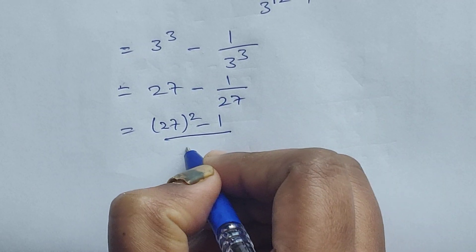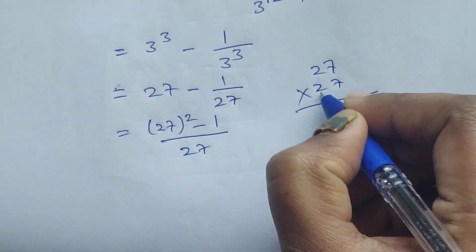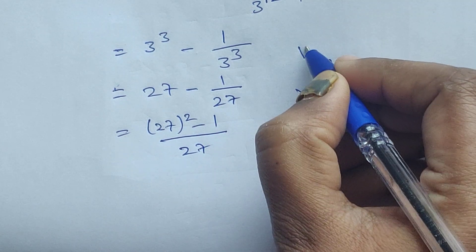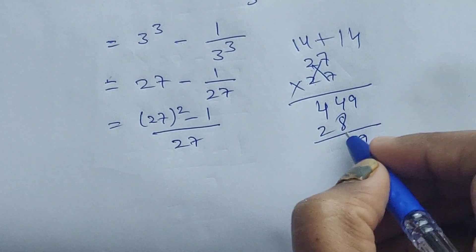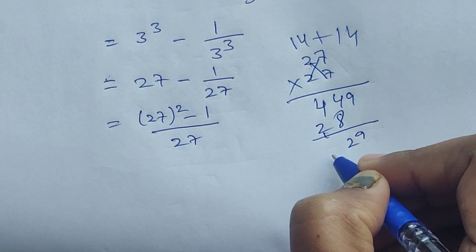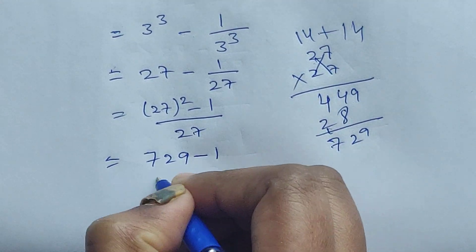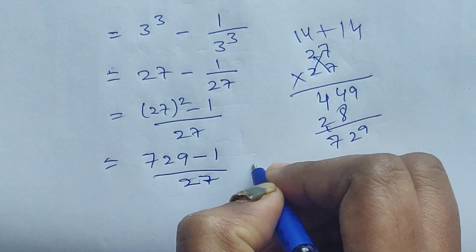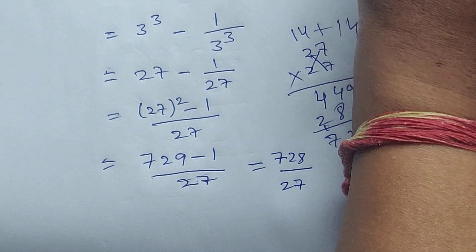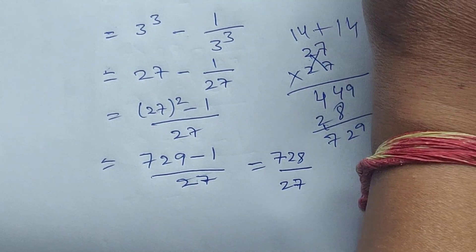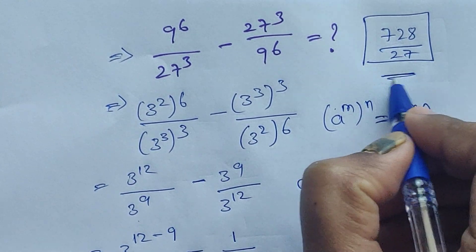So we have (27² − 1) / 27. That gives us 729 − 1 = 728, divided by 27. So the final answer is 728/27.